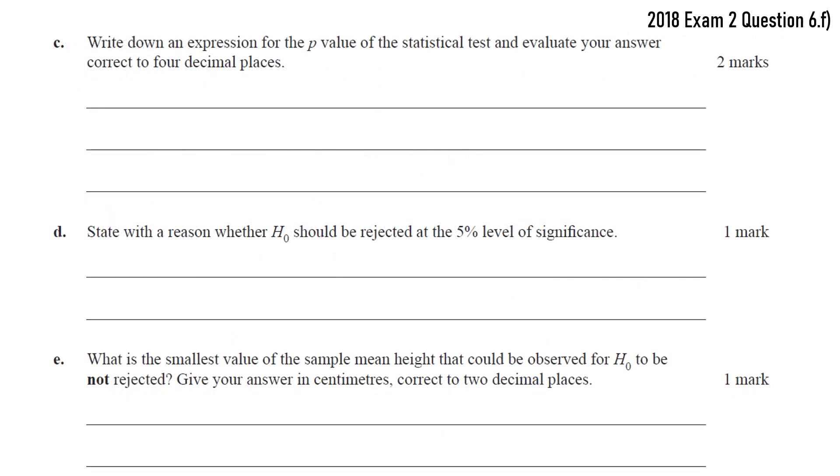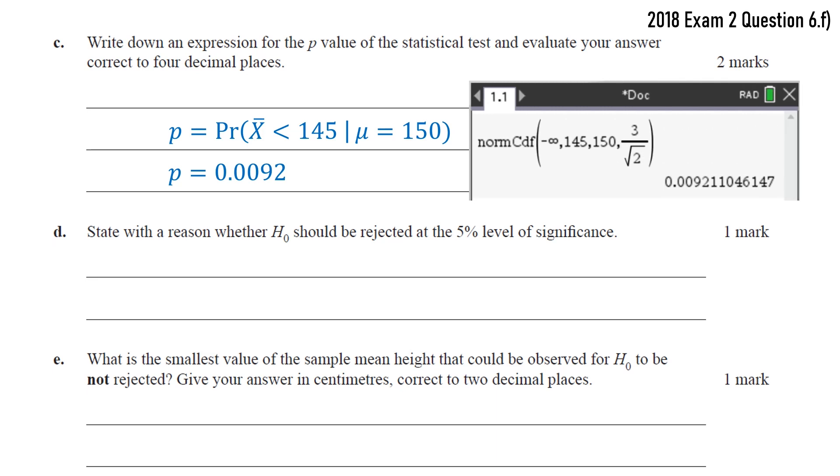For Part C, we're finding the p-value. So the p-value is the probability that we would be more extreme than our sample mean. So in this case, we want to be on the left of 145. We can find that probability on our CAS calculator. It turns out to be 0.0092. Now because that p-value is less than 0.05, we're going to reject the null hypothesis.